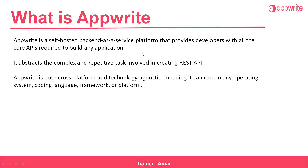Generally when we create an app, we need certain APIs like the API for managing the user account, API for inserting values, updating values, and deleting values. What Appwrite does is it abstracts the complex and repetitive tasks involved in creating the REST API — the APIs will be provided by Appwrite. Appwrite is both cross-platform and technology agnostic, meaning it can run on any operating system, coding language, framework or platform.